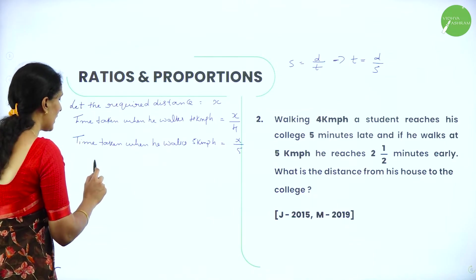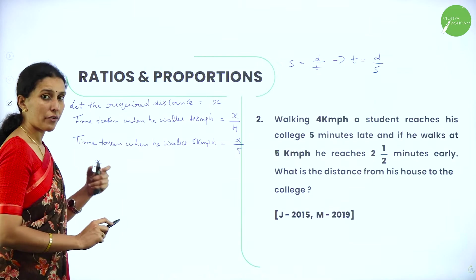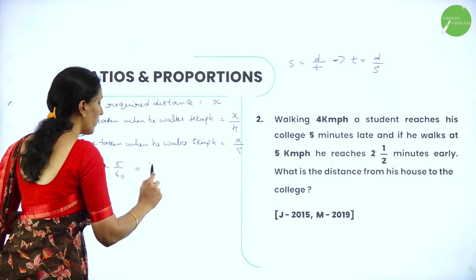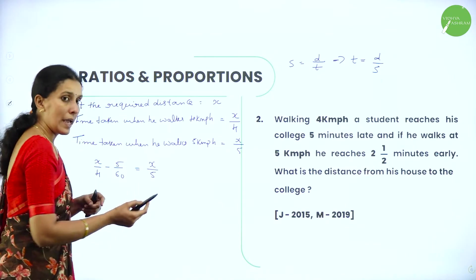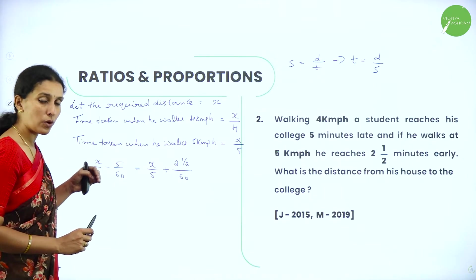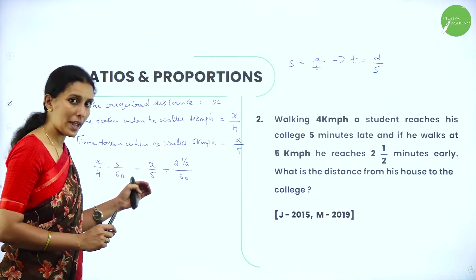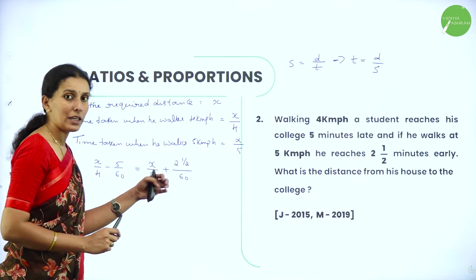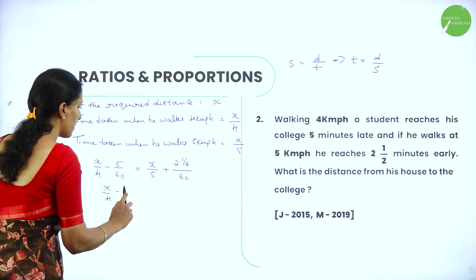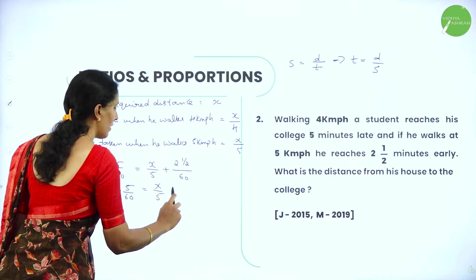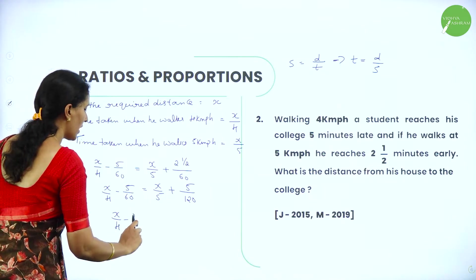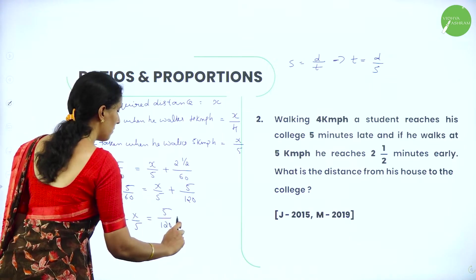When the speed is 4 km per hour he reaches 5 minutes late, that is 5 by 60. Since it is late, I am writing minus here. That equals when he reaches the college 2 and a half minutes early, which is 5 by 120. So: x by 4 minus 5 by 60 equals x by 5 plus 5 by 120. Interchanging the variables and numerals we get x by 4 minus x by 5 equals 5 by 120 plus 5 by 60.